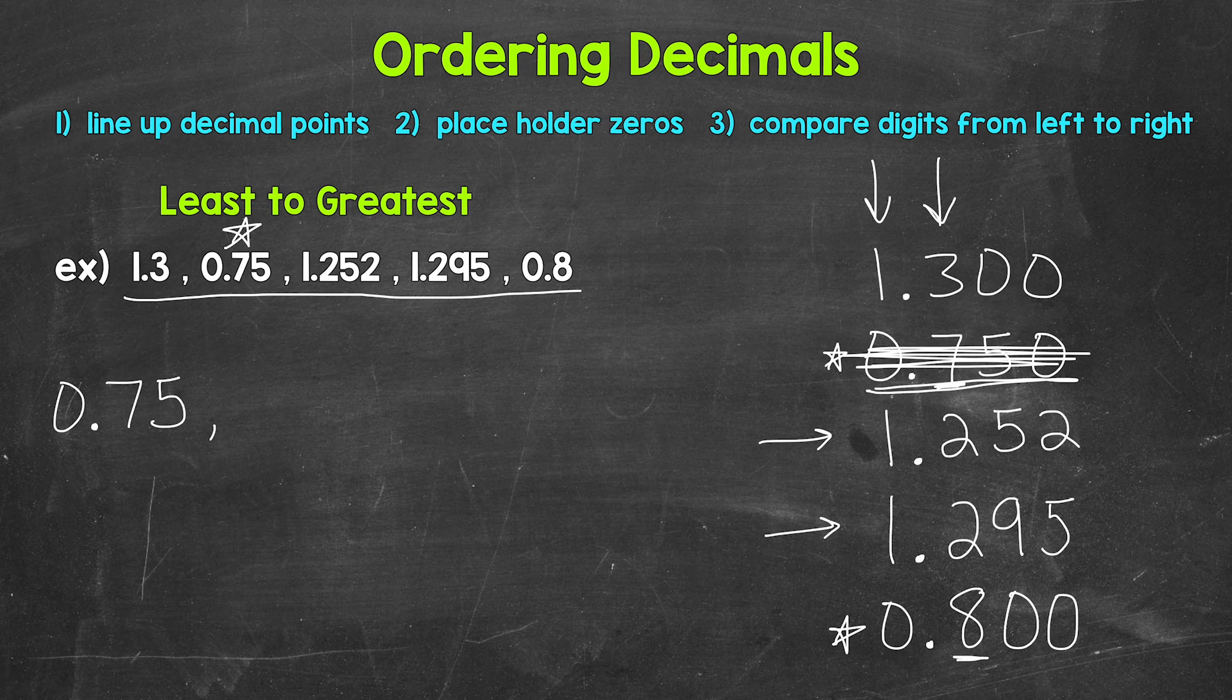Now back to what we have remaining. And we start the process over. So starting in the ones place, we have a one, a one, a one, and a zero. Well, zero is the smallest in value.